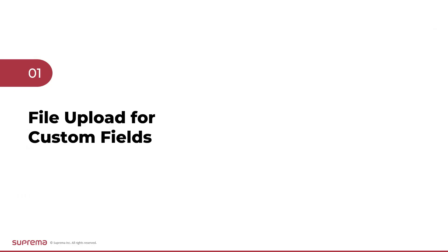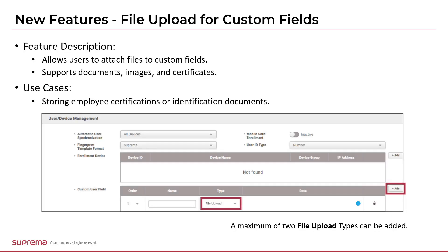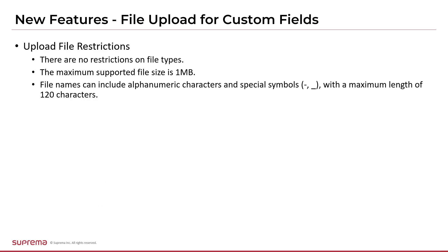Custom user fields can be used when you need additional fields for user information other than the basic user information provided. From version 2.9.8, the ability to upload files has been added. In addition to the user fields that Biostar 2 provides by default, you can define various types of field input values using custom user fields. Previously, it supported three types — text input box, number input box, and combo box — but Biostar 2 version 2.9.8 now supports the file upload function. For example, you can upload a file such as a personal information consent form and manage the document and user information to see whether the user has agreed to operate the Biostar 2 system. This information is not transmitted as the user information of the device, but is stored in Biostar 2. Due to the limitations of upload files, there are no format restrictions and the file size is limited to 1MB.